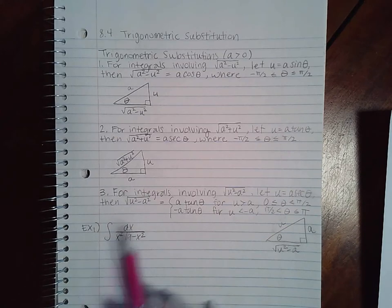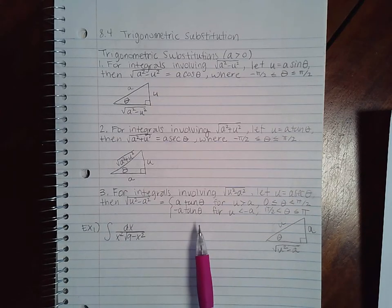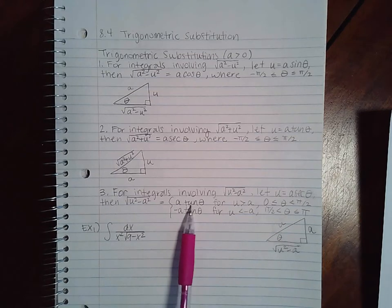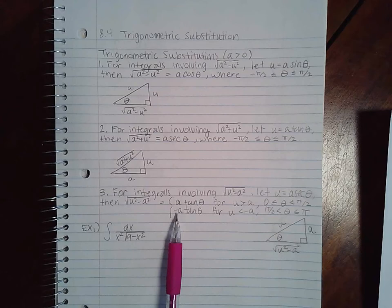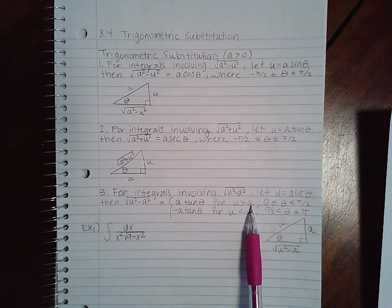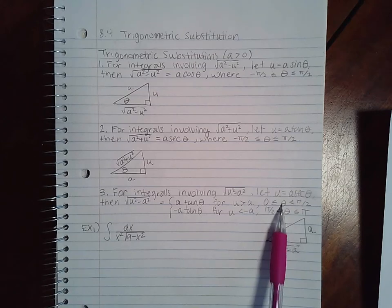Similar for this one and the same thing for this. The one thing about the last one is you have to be careful because the square root could equal that constant times tangent theta, or it could be negative of that constant times tangent theta. It depends on if your variable is greater than that constant or less than that constant.